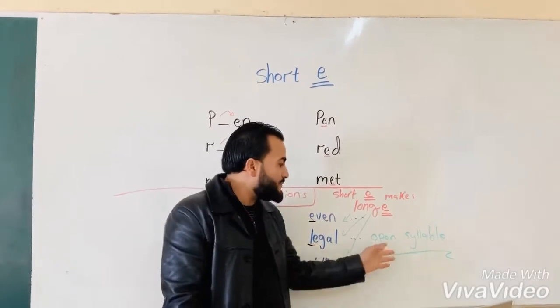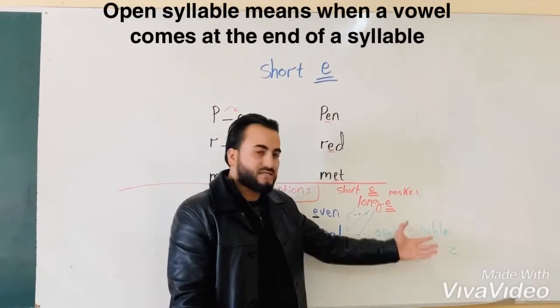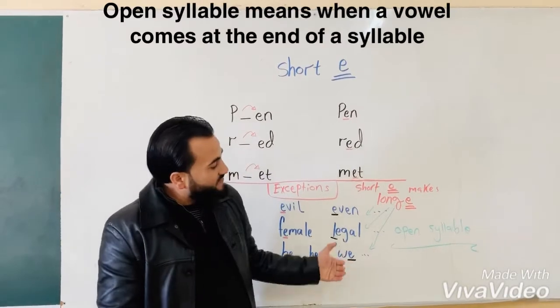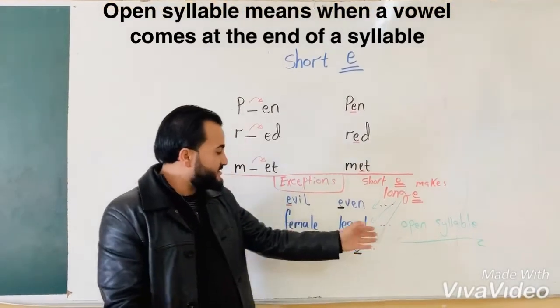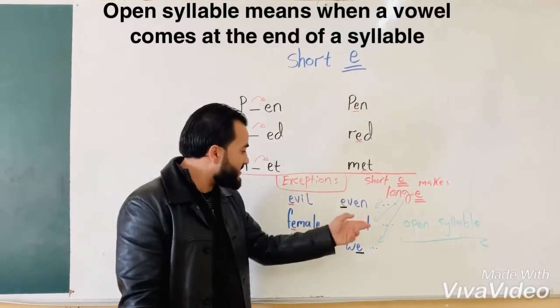In the open syllable. What is an open syllable? When a vowel comes at the end of a syllable, not closed by a consonant. Like here.